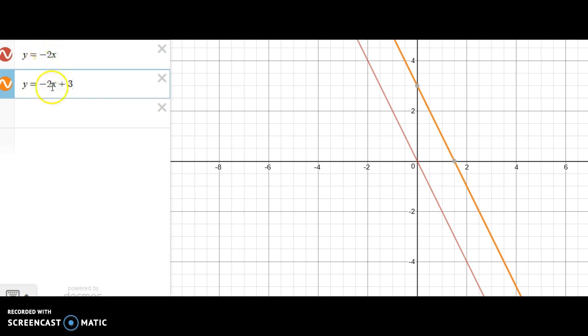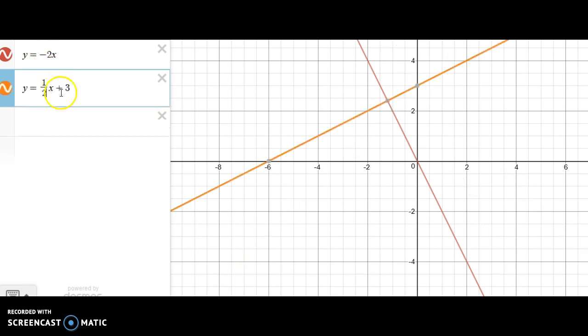So since the slope here is negative 2, if we wanted a perpendicular line, we would have to change that to positive 1 half. And you can see here that these do meet at a 90 degree angle. I changed the negative to a positive. And then 2 wasn't a fraction, but if you think about it as 2 over 1, then that makes it easier to flip. So you would flip 2 over 1 and you would make it 1 half. Those are going to be perpendicular.